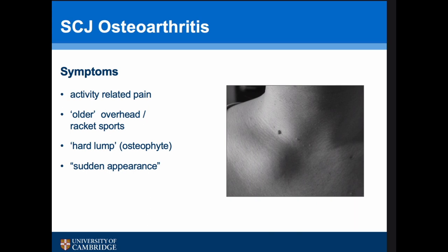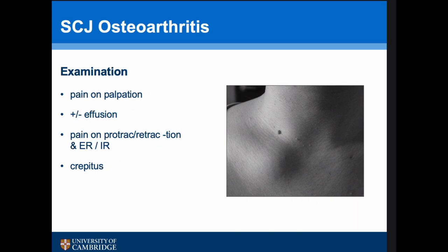The symptoms they present with are activity-related pain. They often notice a hard lump, which is really an osteophyte of the medial end of the clavicle — most people say it appeared suddenly, whereas in fact it's been slowly appearing over time. On examination there's pain on direct palpation, possible effusion, pain on protraction and retraction of the scapula, pain on internal and external rotation, and often an element of crepitus.